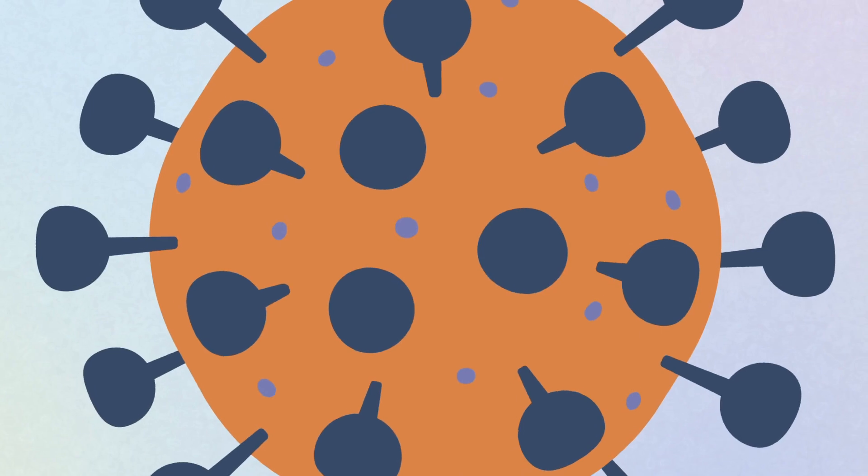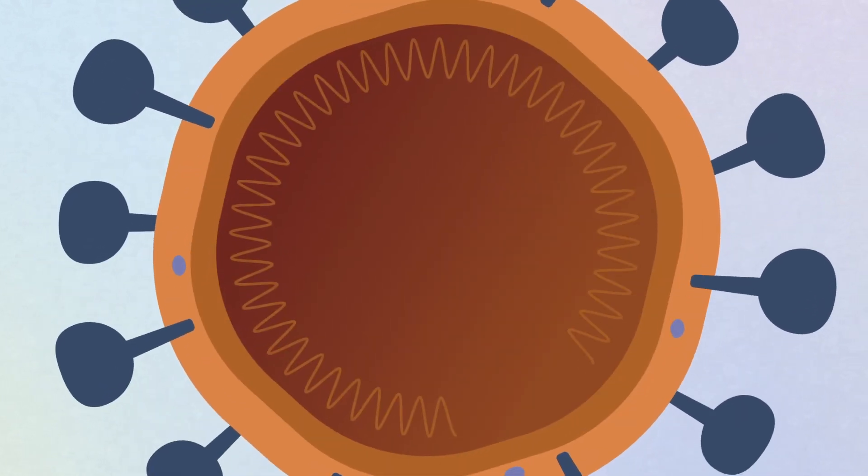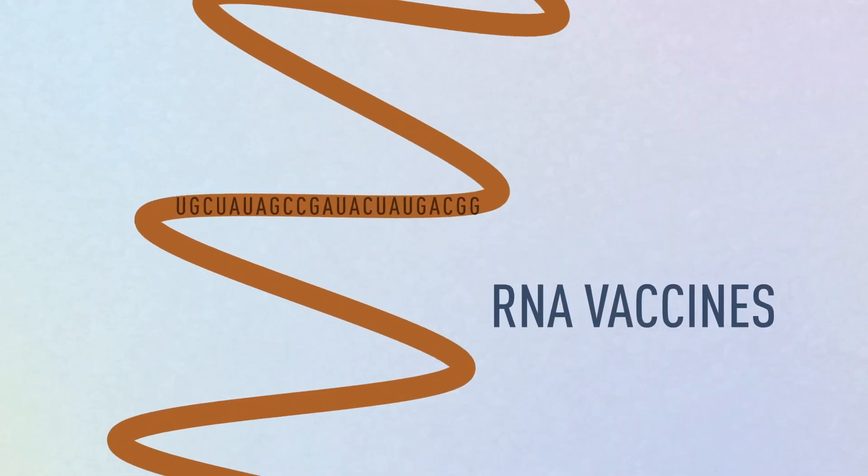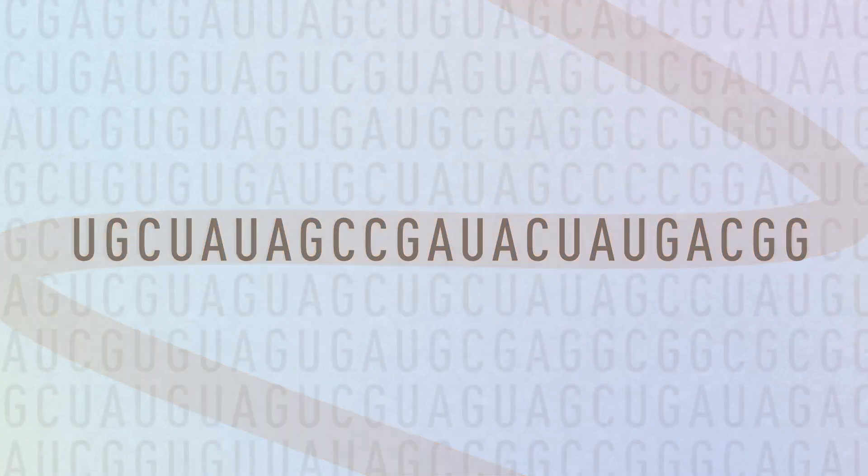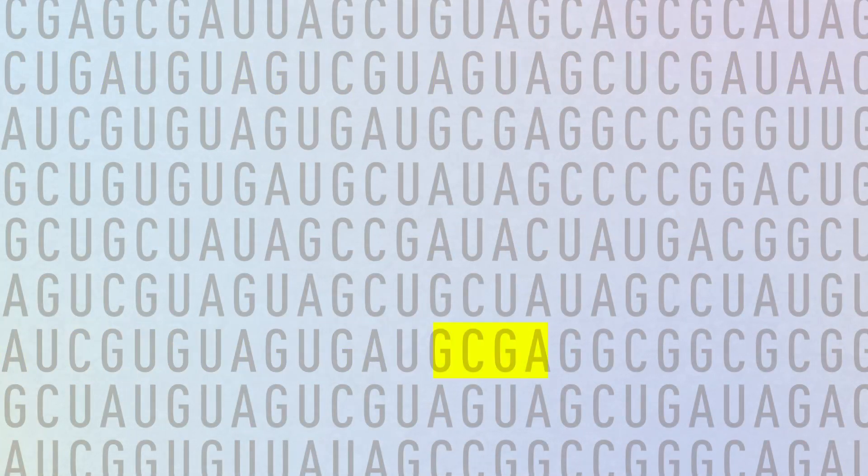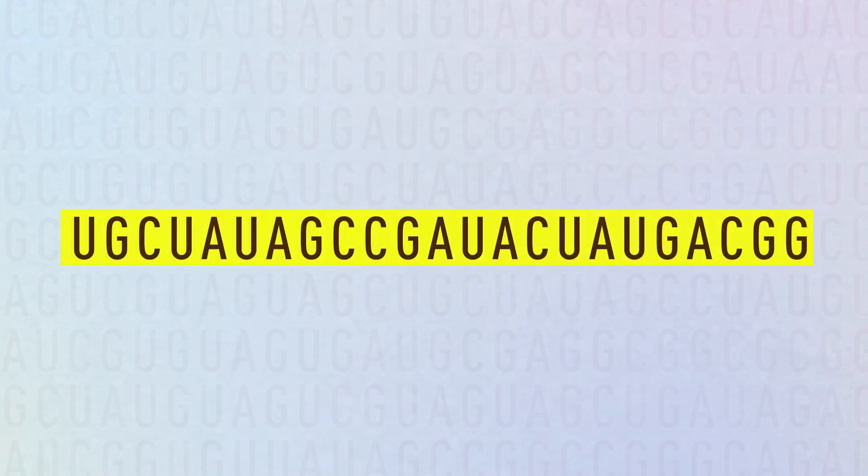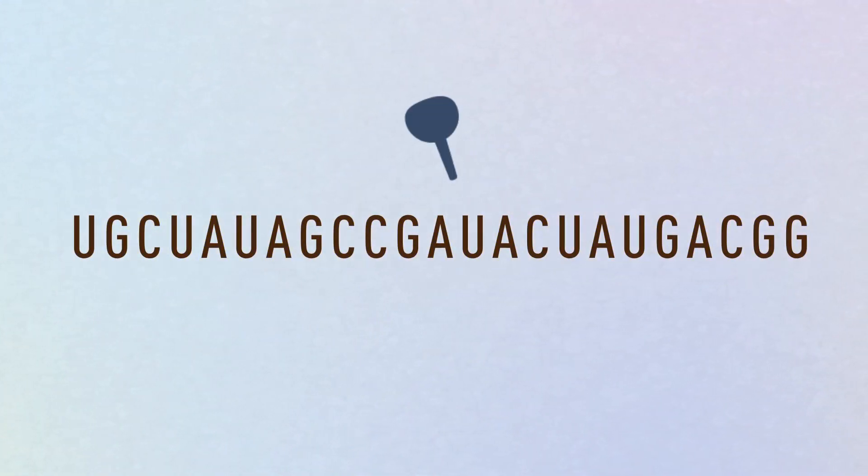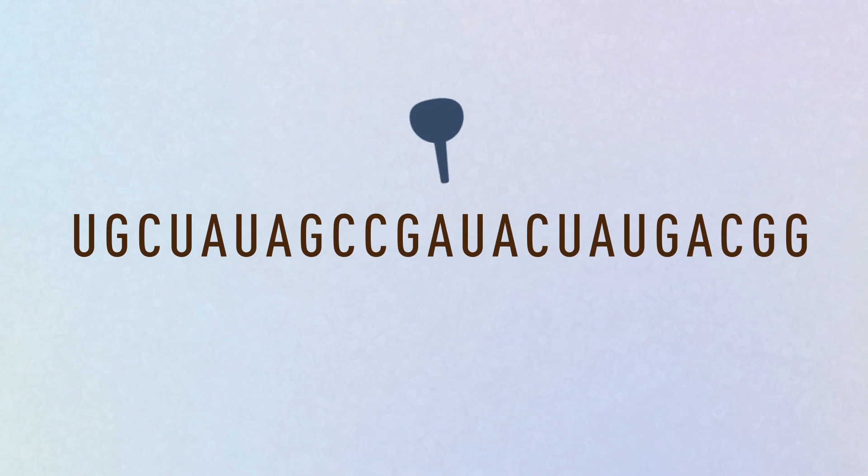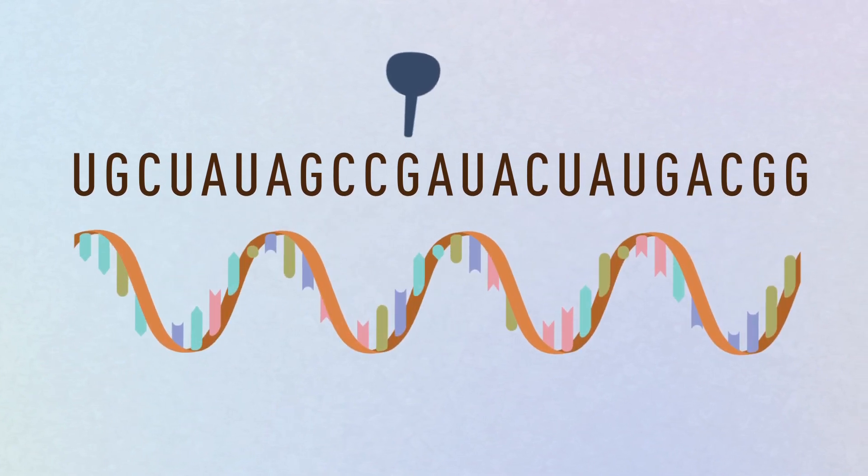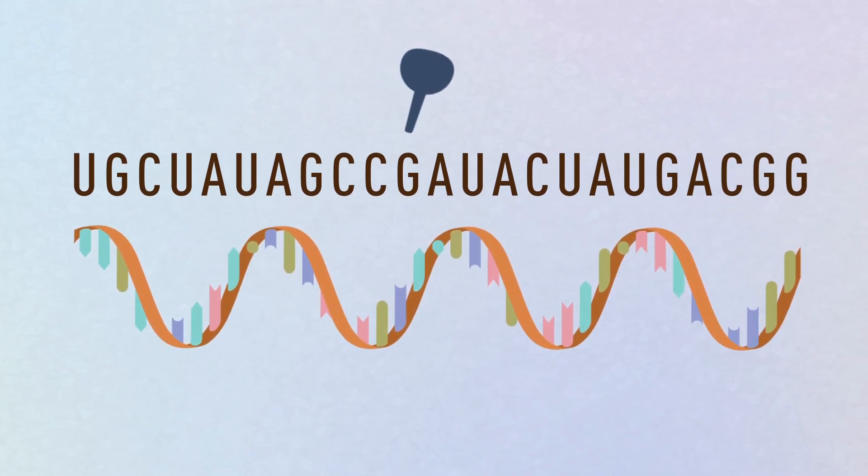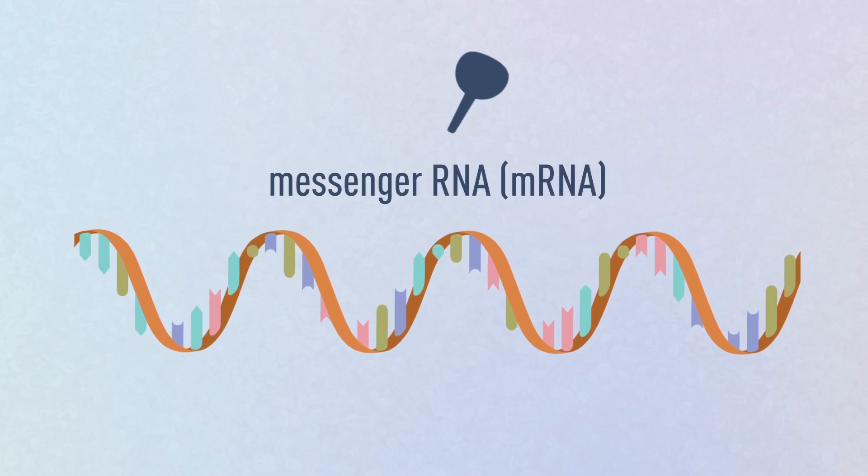New vaccines are taking a different approach. Using advanced sequencing technologies, scientists are able to obtain and analyze the genetic code of a new virus within hours of discovering it. After isolating the code for the virus' specific and recognizable proteins, scientists can create a template for that protein – a short, single-stranded sequence of nucleotides, called messenger RNA.